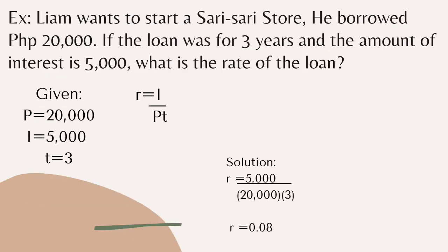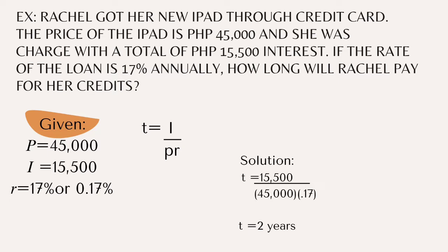Third example: Liam wants to start a Sari Sari store. He borrowed 20,000. If the loan was 3 years and the amount of interest is 5,000, what is the rate of the loan? The given: principal is 20,000, interest is 5,000, and time is 3. The formula is R equals I divided by P times T.